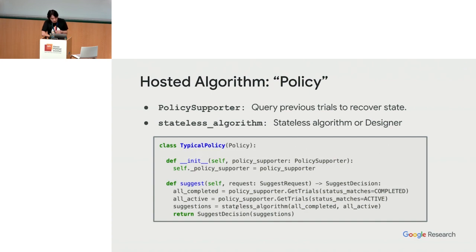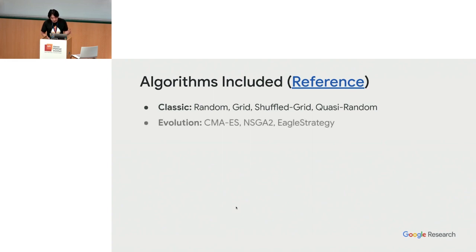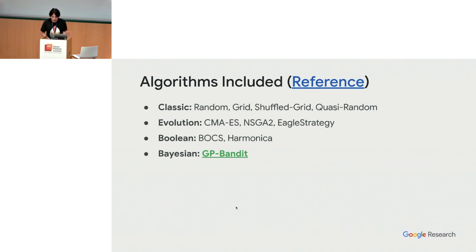You'll notice this might be slightly inefficient if you're required to load literally all trials. If you're working on an evolution algorithm and your history is millions of trials long, it's very inefficient to load all of them. So the policy supporter also allows selectively loading certain trials, and can load metadata — you can save algorithm states in JSON or string format and reload them back. Here are the algorithms included in our package: classic ones like random search, grid search, shuffle grid search, and quasi-random; evolutionary algorithms like CMAES and NSGA; Boolean ones from the research literature like Harmonica and Box; and our default Bayesian optimization algorithm, GP Bandit.